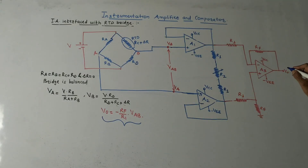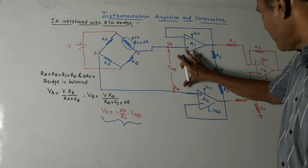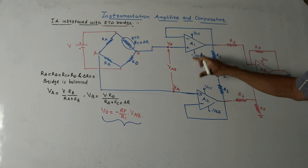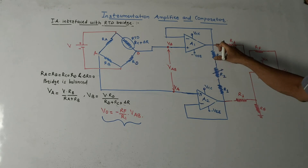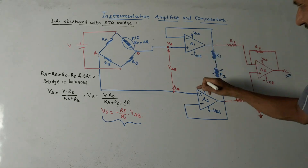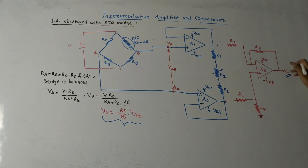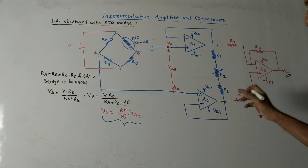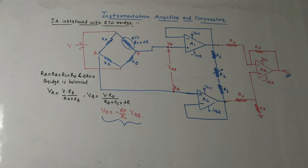The final output voltage of this amplifier is: V0 = −(Rf/R1) × VAB. Since A1 and A2 are unity gain followers, the voltage VAB passes through unchanged. At the input of the difference amplifier you still have VAB, and accordingly the output voltage is −(Rf/R1) × VAB.